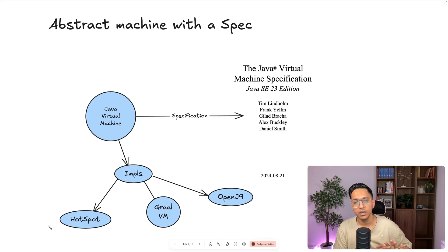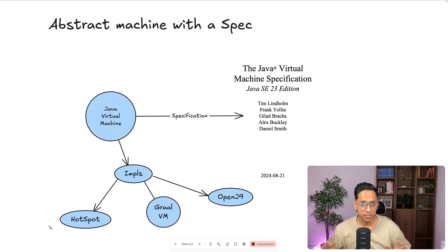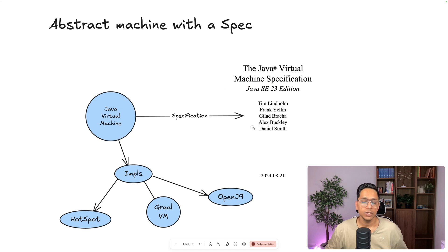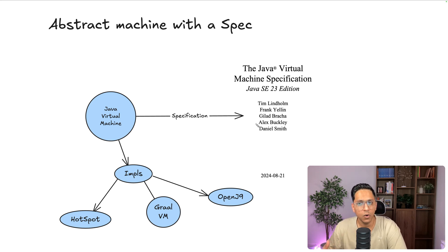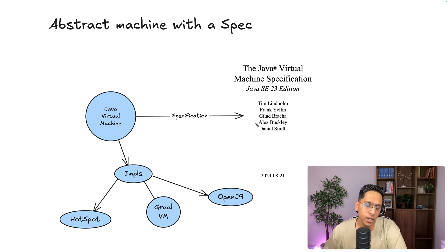This abstract machine has a specification — the Java Virtual Machine Specification, and we have the latest edition here. I totally and highly recommend everyone working on the JVM to read the specification, at least some parts of it, because it's nicely written. You will understand how it doesn't go really into implementation details, and it's an interesting read. I would definitely recommend you all to read that.